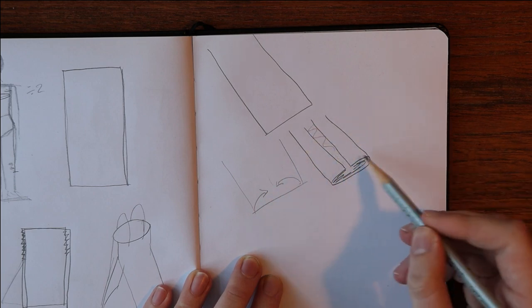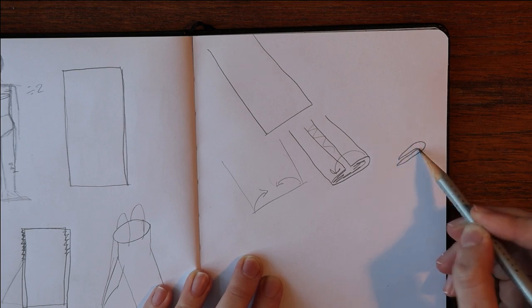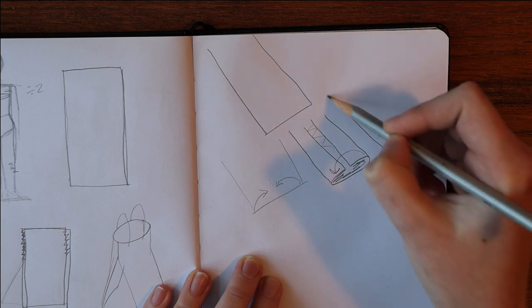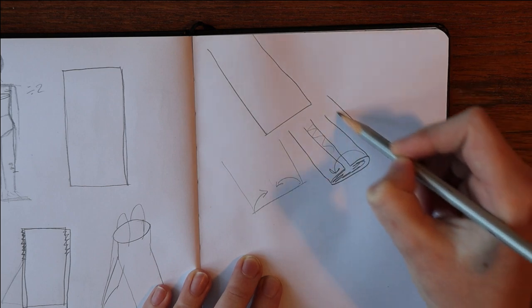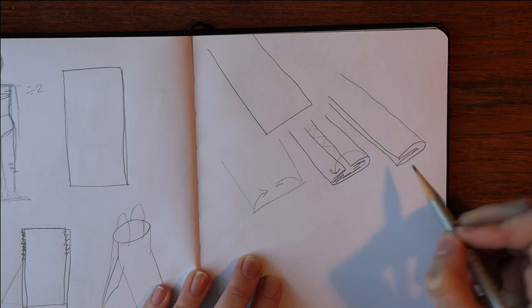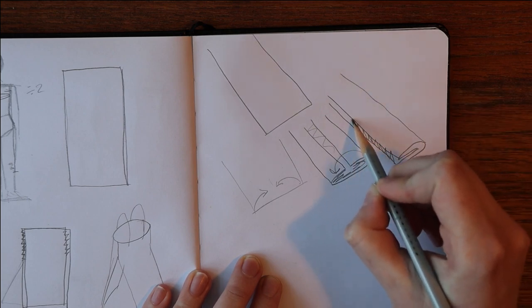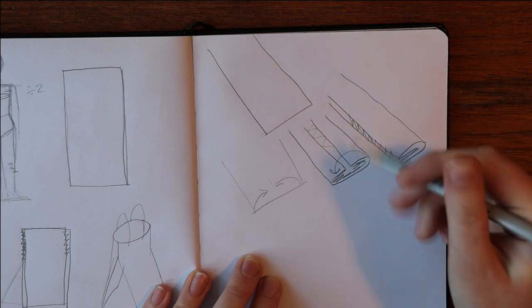And then you're going to fold that over again, so it's going to end up looking like that from the side. And all of this you're just going to press with the iron. And then you're going to stitch up along this long seam.